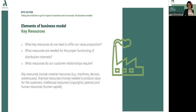The last piece of the business model is the cost structure. This section refers to the total expenses that a business incurs in order to operate its business model and create value for its customers. It includes all costs associated with delivering the company's products or services, as well as any overhead or operating expenses. Cost structures can be broken down into two categories: fixed costs that remain constant regardless of the level of production or sales, such as rent, salaries, insurance, equipment, and maintenance.